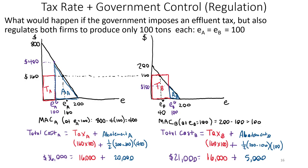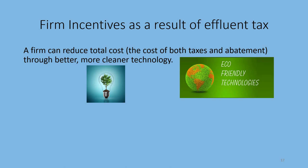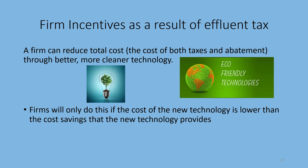Let's talk about firms' incentives as a result of an affluent tax. When the government taxes emissions, the question is: how far should firms go to reduce emissions using better technology? A firm can reduce total costs — both taxes and abatement — through better, cleaner technology, which shifts the marginal abatement cost curve downward. Firms will only do this if the cost of the new technology is lower than the cost savings that technology provides.